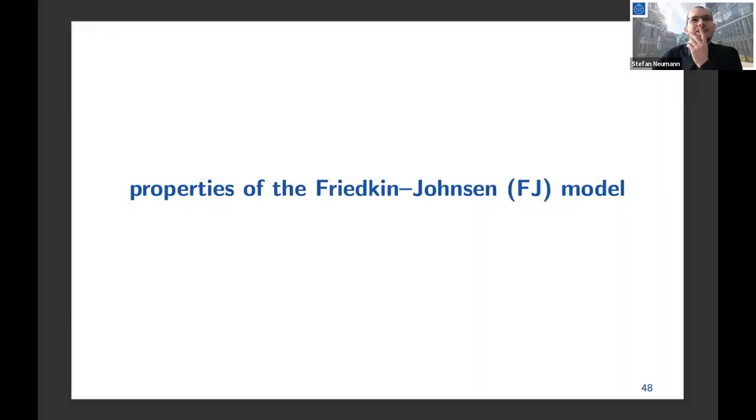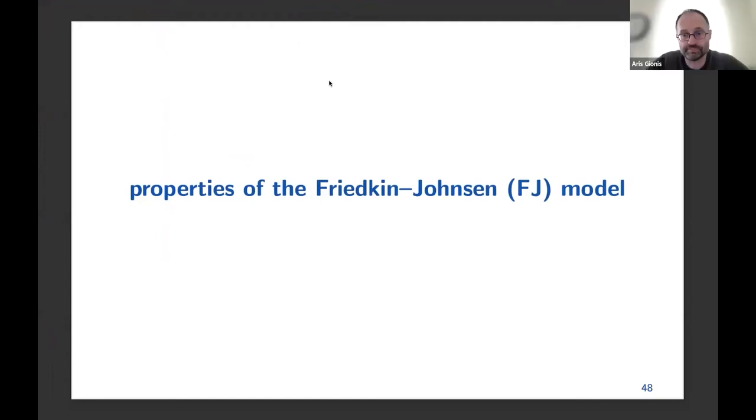We're all back and refreshed. For the rest of the talk, we'll be talking about the Friedkin-Johnson model. I'll be talking about the FJ model for the rest of the talk. We'll first talk about some of the properties of it — I'll give a brief recap so we're all on the same page. Then I'll talk about computational aspects, and I'll tell you about how we can use these models to understand the impact of algorithmic interventions such as timeline algorithms, by studying optimization problems.